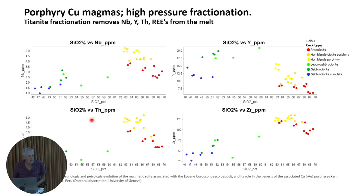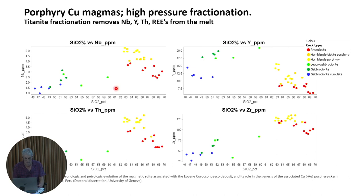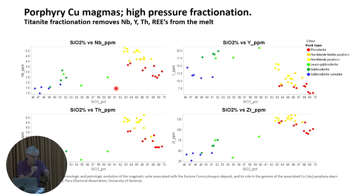For the last 10 years I've been working mostly on porphyry copper systems, not on Archaean things, and if you work on porphyry coppers you have to study up on magma chemistry — this stuff is super interesting. If you've done petrology 101 at university, your lecturers will tell you that zirconium, hafnium, yttrium, and thorium — all those high field strength elements — are incompatible elements. That means in a melt there's no common mineral phase that they'll substitute into, so as a melt fractionates these things become more and more enriched in the magma. As silica content goes up, zirconium goes up, thorium goes up — but porphyry copper magmas are different.